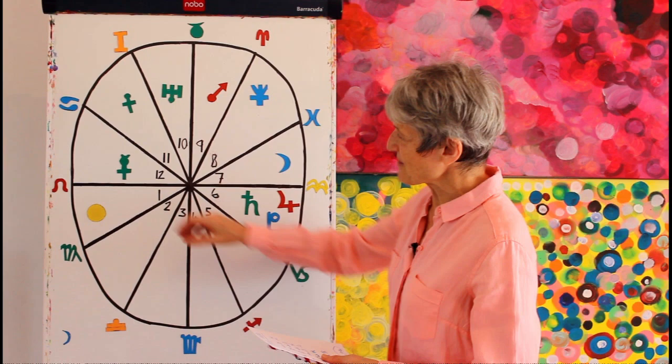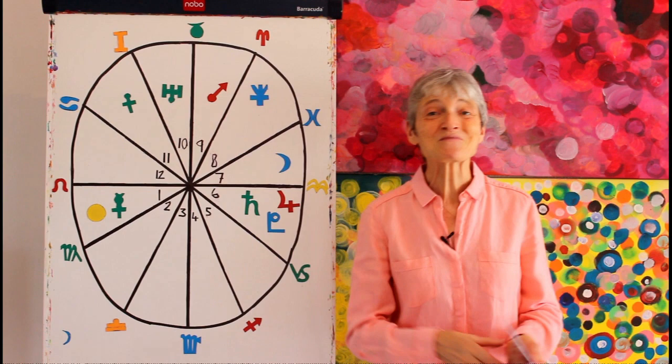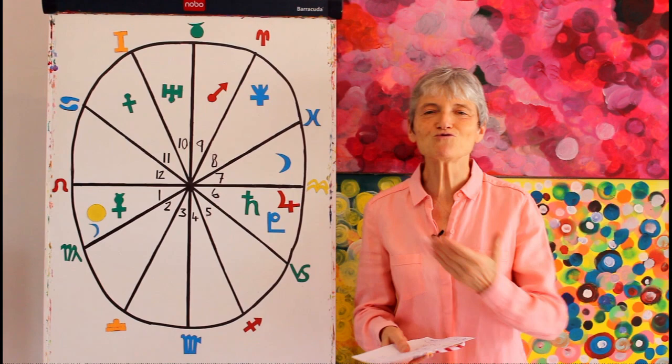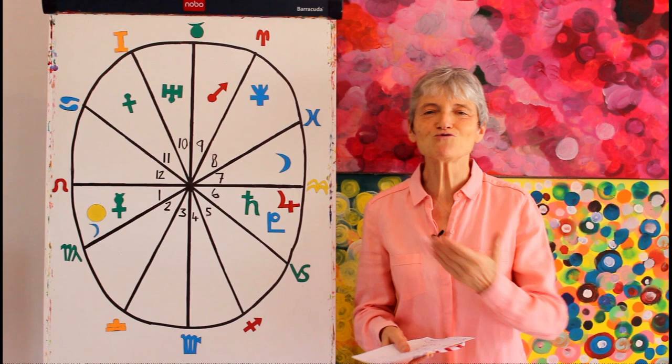On the fifth of the month we've got Mercury coming to join the Sun in your sign. It's birthday time and also on the 18th of the month we've got a lovely new moon happening in your sign Leo. So this is your time. This is your new year.